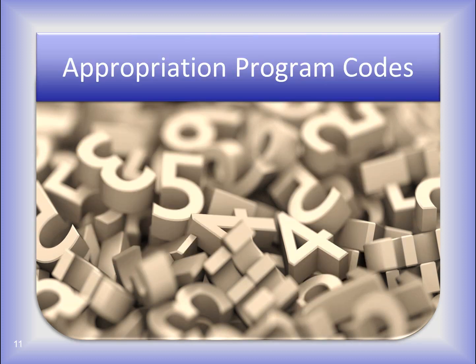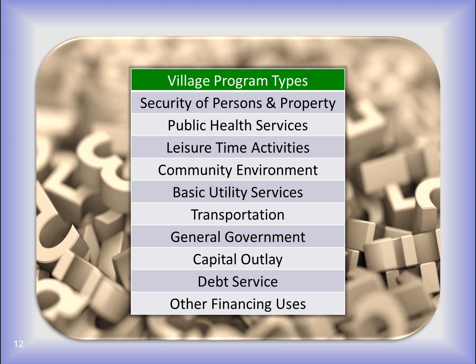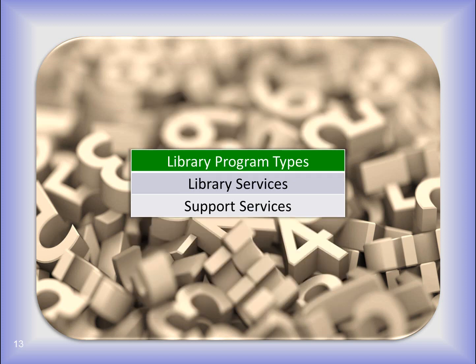Appropriation program codes describe a service area provided by the entity. It is very important to select program codes from the correct program type. On the screen you see the program types that belong to the Township Chart of Accounts, and within each of these types are program codes. These are the program types that belong to the Village Chart of Accounts, and within each of these types are individual program codes. And finally, these are the program types that belong to the Library Chart of Accounts, within each of which there are program codes.